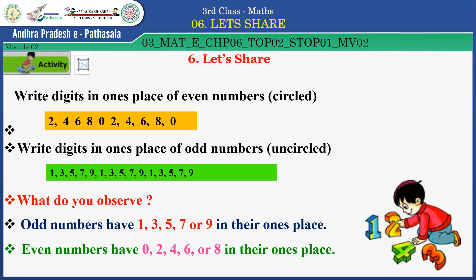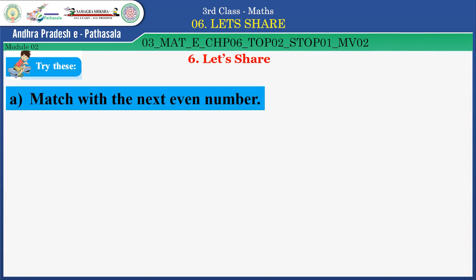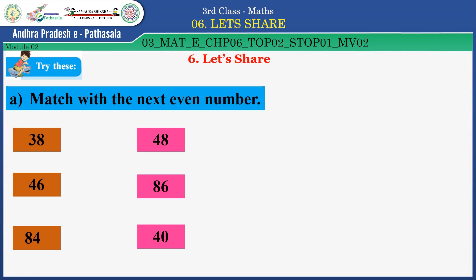Now let us move to the next exercise: Try these. You have to match with the next even number. Look at this: 38 — the next even number for 38 is 40. What is the next even number for 46? 48. Next: 84 — the next even number for 84 is 86. Well done, children.